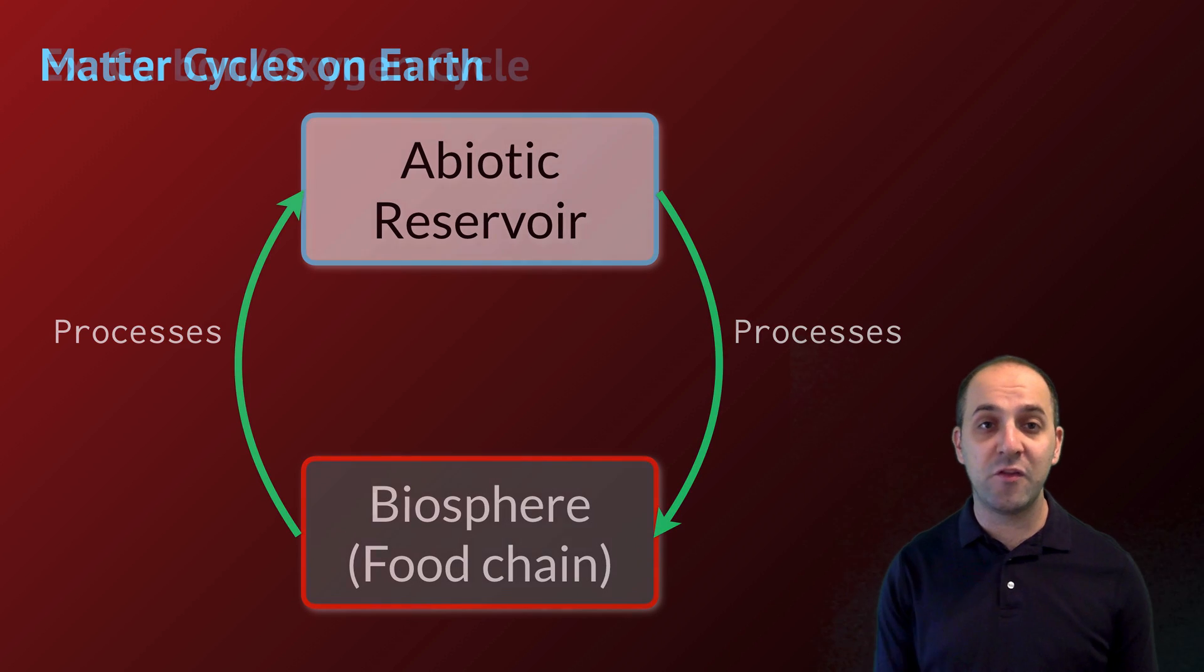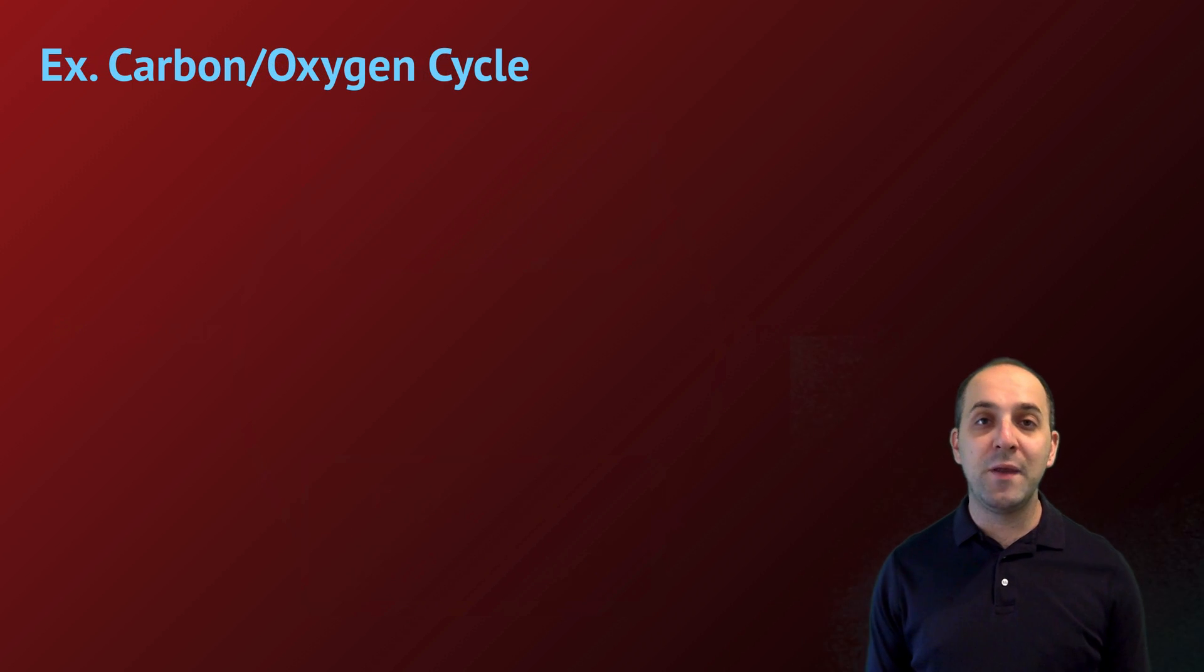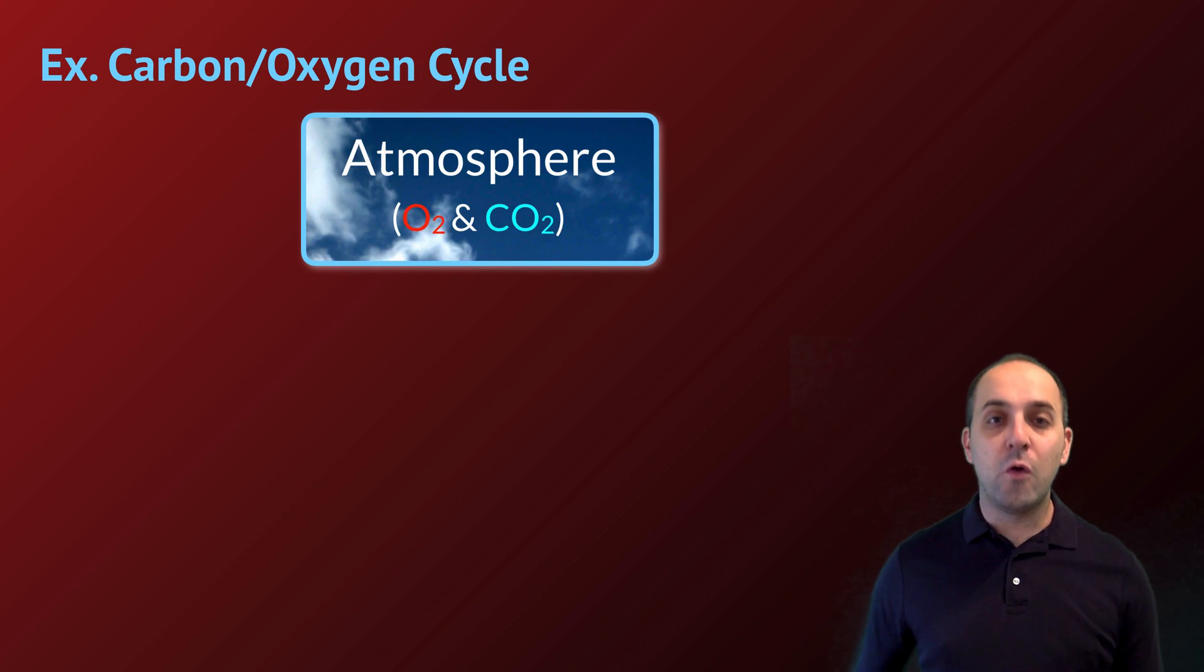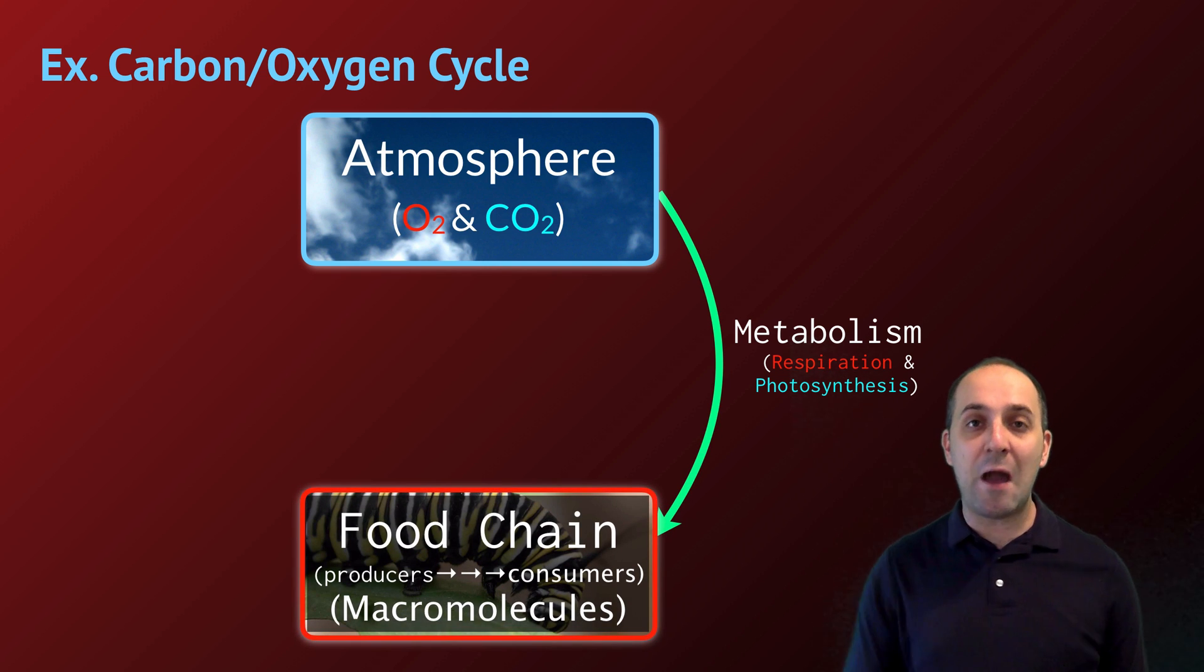And by the biosphere, we're really talking here about the food chain. Some organism is going to intake those elements from the abiotic reservoir, and then other organisms are going to get access to those elements by eating each other. There are going to be a series of processes that take matter from the abiotic reservoir and bring it into the biosphere.